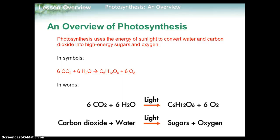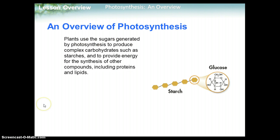To overview photosynthesis: photosynthesis uses the energy of sunlight to convert water and carbon dioxide into high-energy sugars and oxygen. Six molecules of carbon dioxide react with six molecules of water — those are the two reactants. The two products are a molecule of glucose and six molecules of oxygen. You do need light energy for this reaction to happen. Plants use the sugars generated by photosynthesis to produce complex carbohydrates such as starches, and to provide energy for the synthesis of other compounds including proteins and lipids. Plants are autotrophs — they make their own food and carbohydrates.